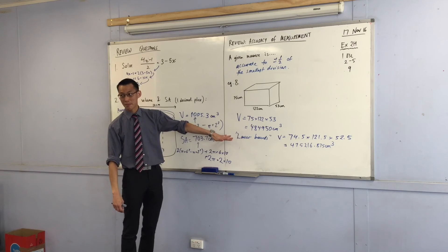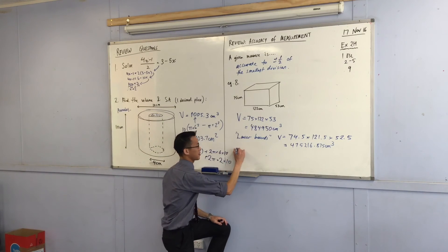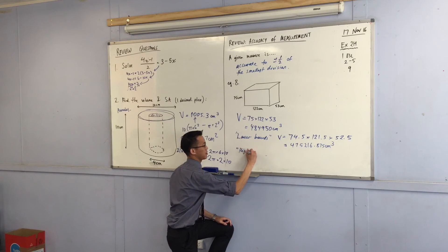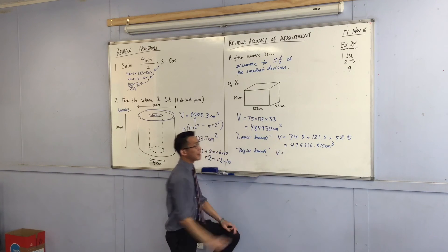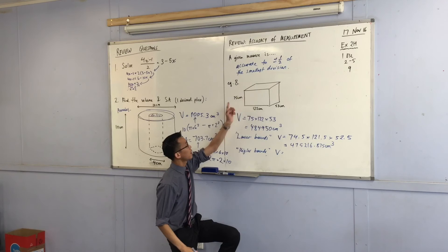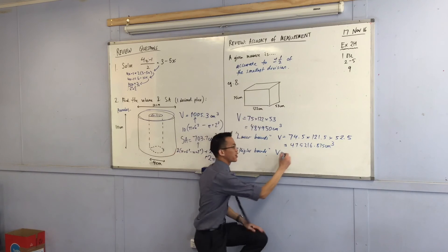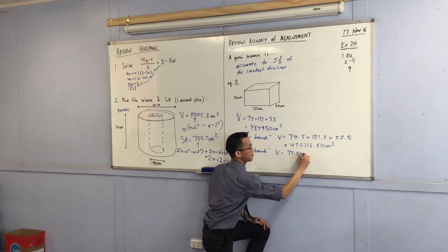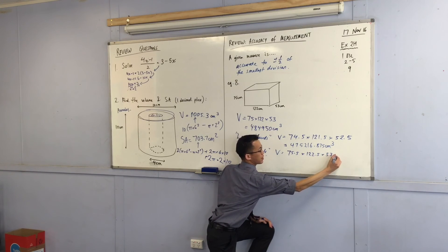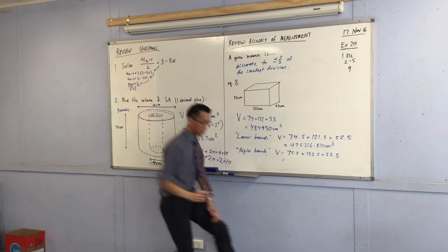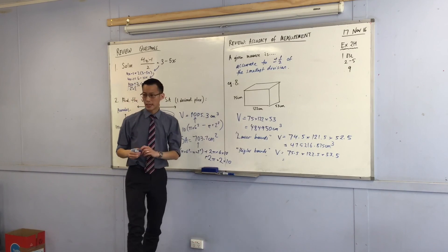Where am I going to go now? What if it was higher? So you get this. Higher bounds. So I'm going to go back to the original measurements, and I'm going to think about if they were bigger, they could go up to 75.5, 122.5, and 53.5. What are we going to get?